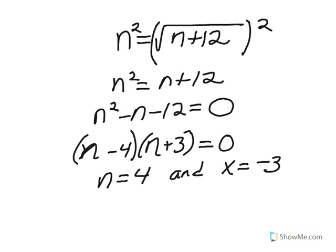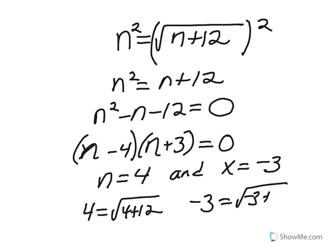However, when we check these solutions back to the original equation, we see that it is fine for 4 to equal the square root of 4 plus 12. That works. However, negative 3 does not equal the square root of negative 3 plus 12, because a radical can never equal a negative.